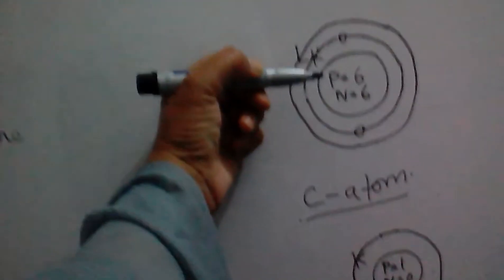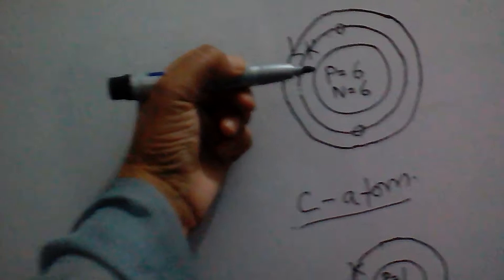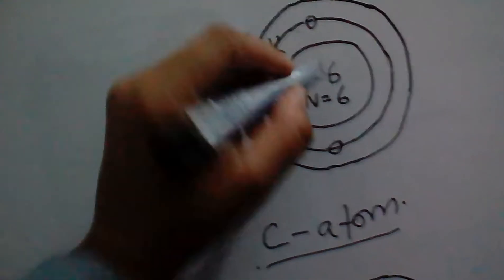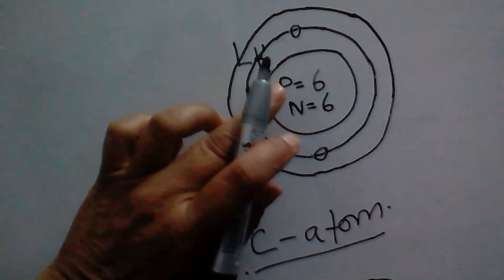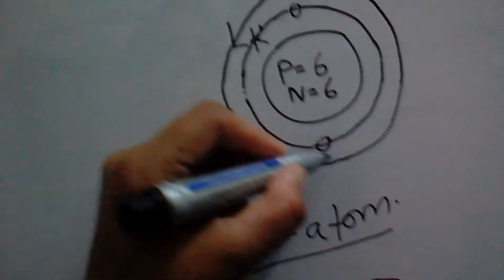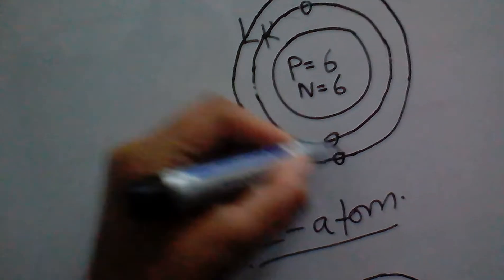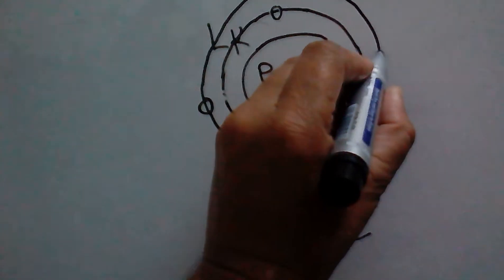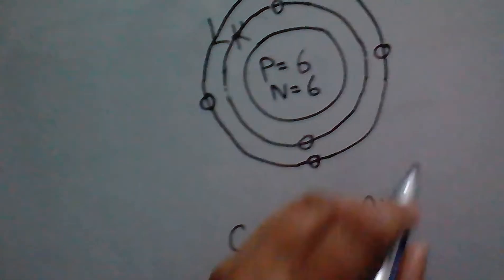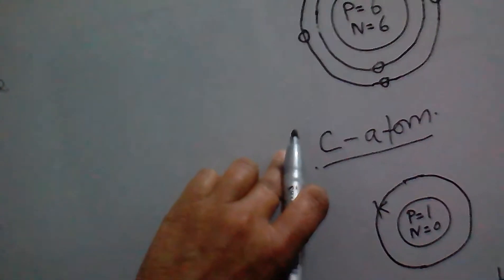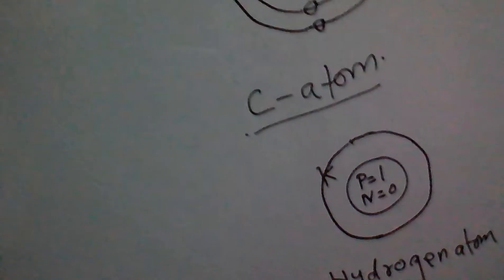After adjusting two electrons in the K shell, we are left with four only. So we'll adjust four electrons in the L shell. This is the structure of Carbon Atom — ye Carbon Atom ki structure hai aap ke paas.